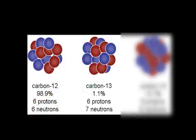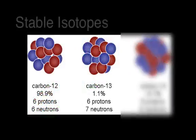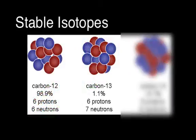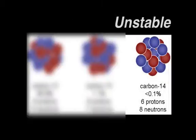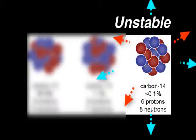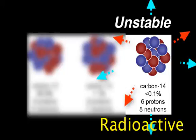Carbon-12 and carbon-13 are what we call stable isotopes, meaning that their nuclei do not lose particles or energy. Carbon-14 is unstable — its nucleus will emit energy and particles, and this activity makes it radioactive.